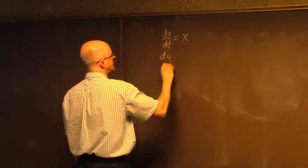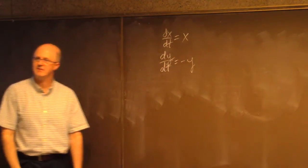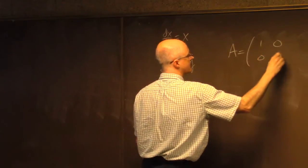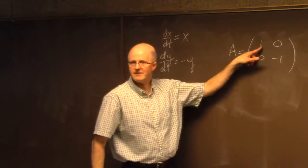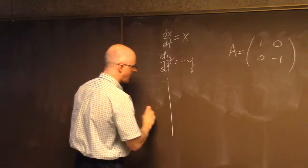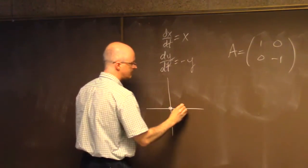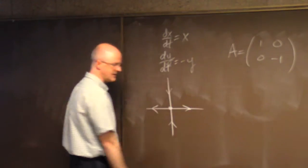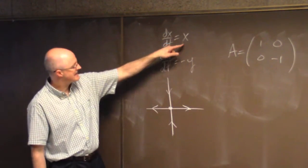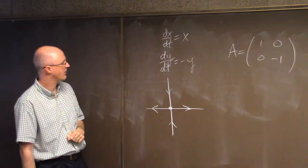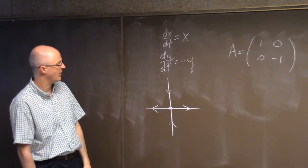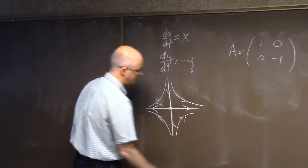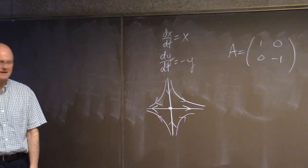Let's consider a simple example: dx/dt = x, dy/dt = −y. Effectively this is the simplest kind of saddle you can think of. The corresponding matrix would be diagonal with entries one and negative one — those are the eigenvalues. The origin is going to be your only equilibrium point. The x-axis is going to be the unstable separatrix, and the y-axis is going to be the stable separatrix. Along the x-axis you move away from the origin; along the y-axis you approach the origin. If you don't start on the x or y axis, you follow the typical saddle-point paths.